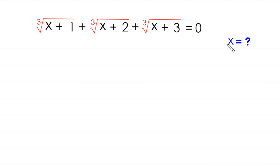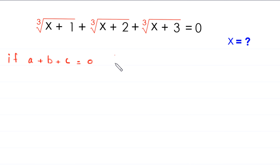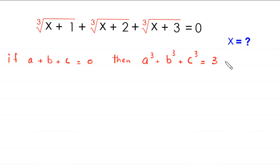So let's start. By using this algebraic identity: if we have a plus b plus c is equal to 0, then a cubed plus b cubed plus c cubed will be equal to 3 times a times b times c.